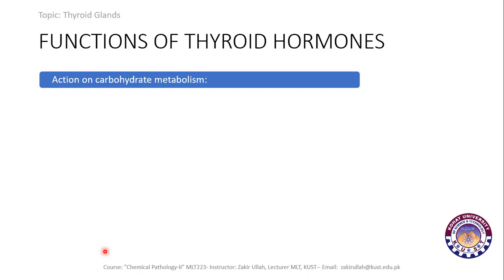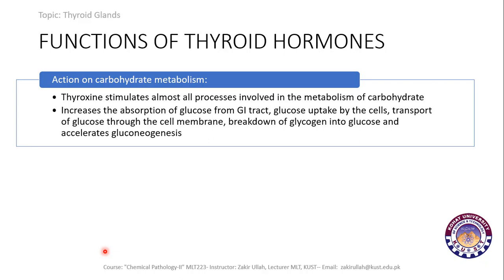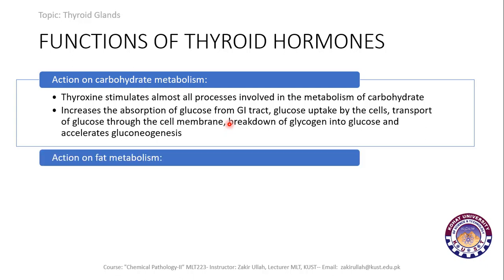The action on carbohydrate metabolism: thyroxine (T4) stimulates almost all processes involved in carbohydrate metabolism. This includes increased absorption of glucose from the gastrointestinal tract, increased glucose uptake by cells, transport of glucose through cell membranes, breakdown of glycogen into glucose, and acceleration of gluconeogenesis.